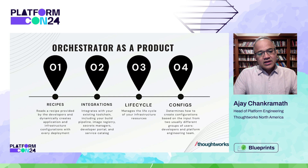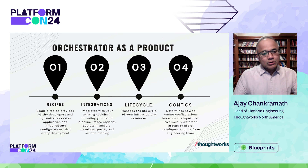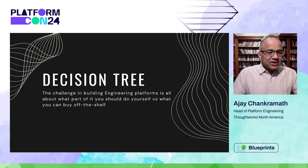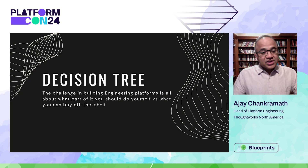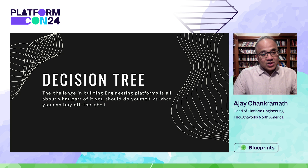Let's start looking at a potential decision tree. A decision tree in this context would be: how does an organization make a decision on what exactly is needed to build an orchestrator as part of an internal developer platform? The key consideration is: should you build it or buy it? This is the classic question within engineering teams. Both are possible. You can definitely build it on your own — many teams have. But lately we really think about buying some of these things because there are some excellent options out there.